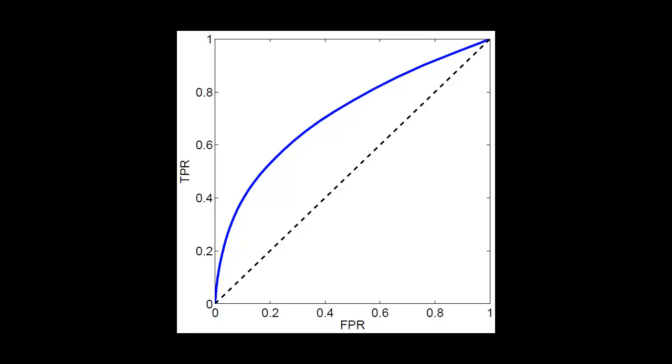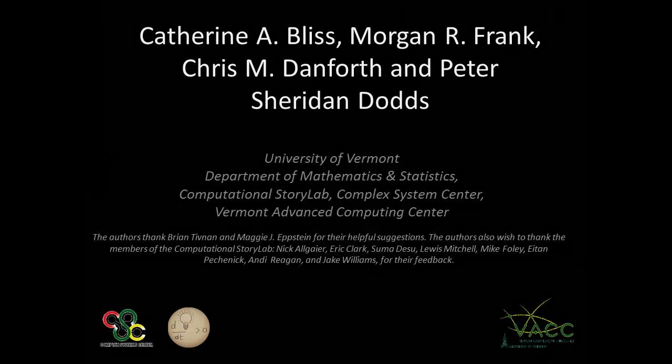I'm glad you asked that. One way of measuring success comes from looking at the receiver operating curve shown here. This curve shows that we did really well. The true positive rate is higher than our false positive rate. There are a lot of other details that we couldn't include in this short video. So stay tuned for our full paper which details our analysis and results.